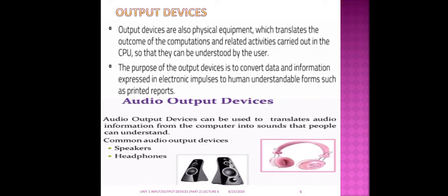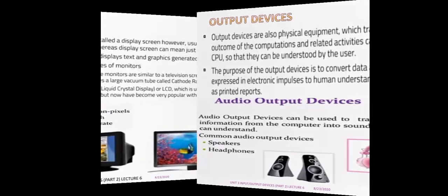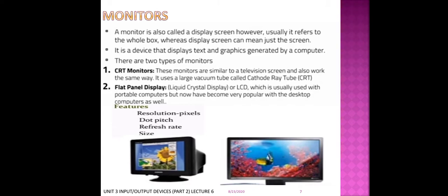We have monitors. A monitor is also called a display screen because we can have text and graphics displayed on it. There are two types of monitors: CRT — cathode ray tube — which uses a large vacuum tube, an invention from the first generation of computers, and flat panel display, which is also called liquid crystal display (LCD).